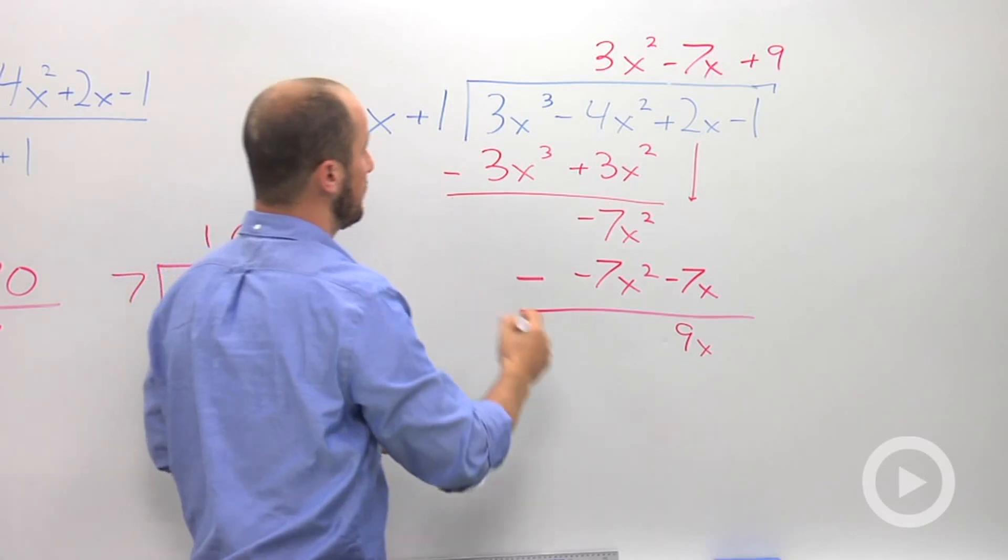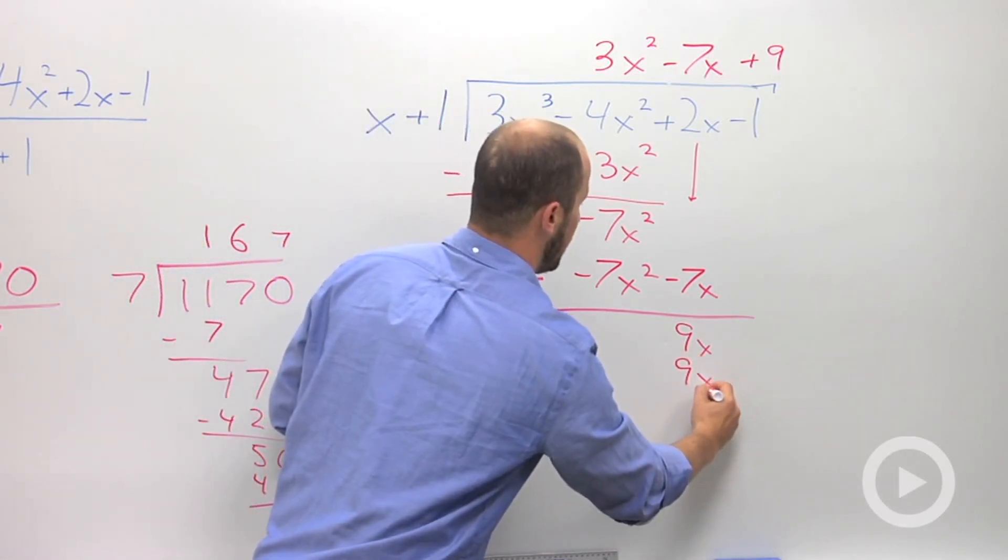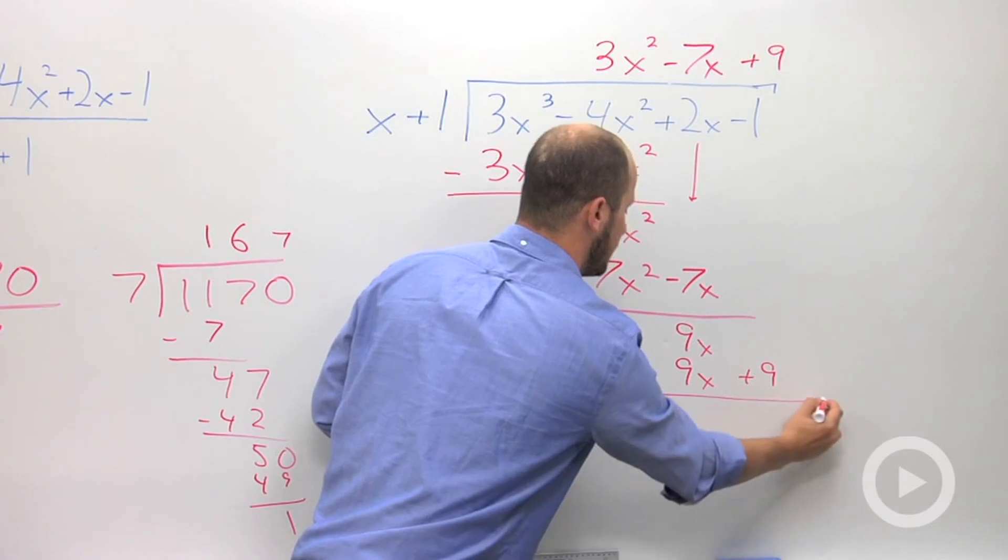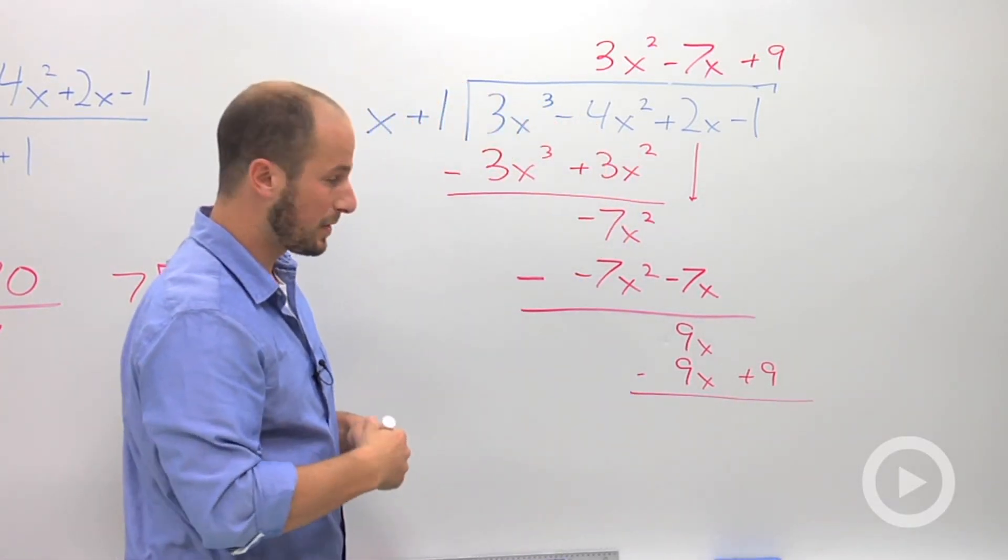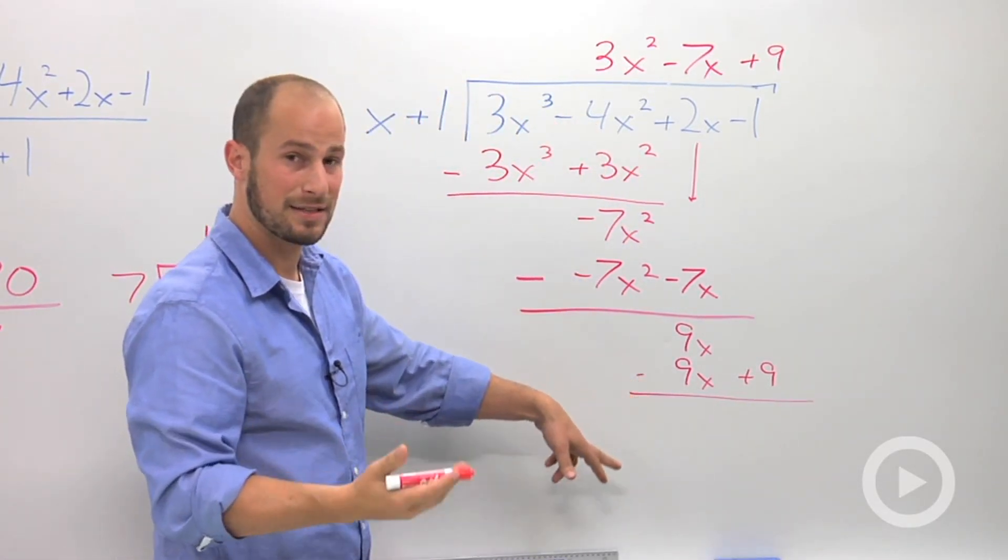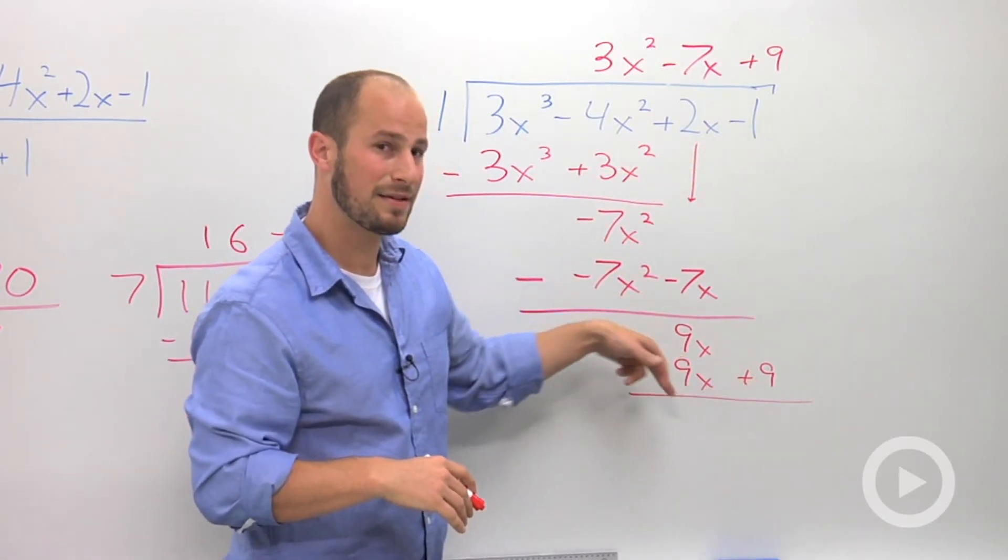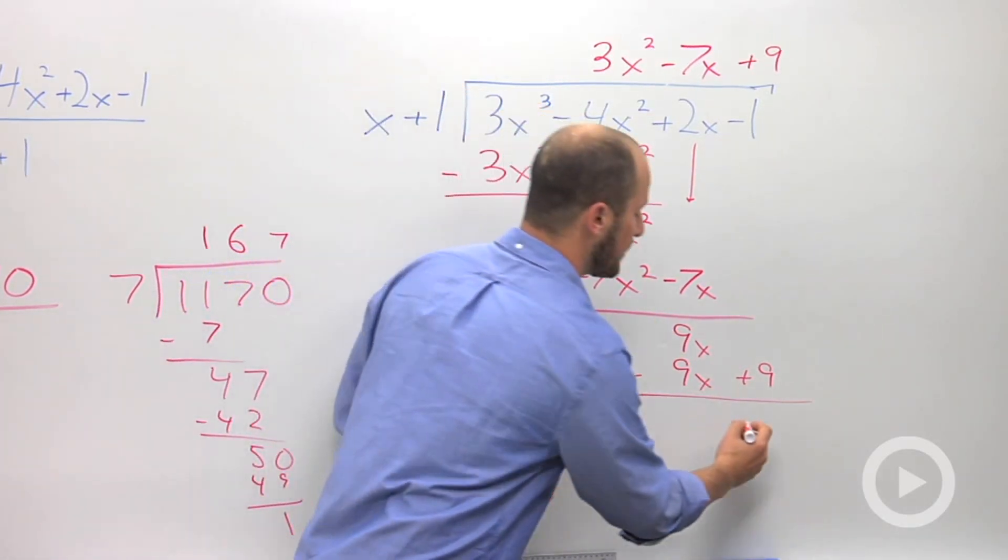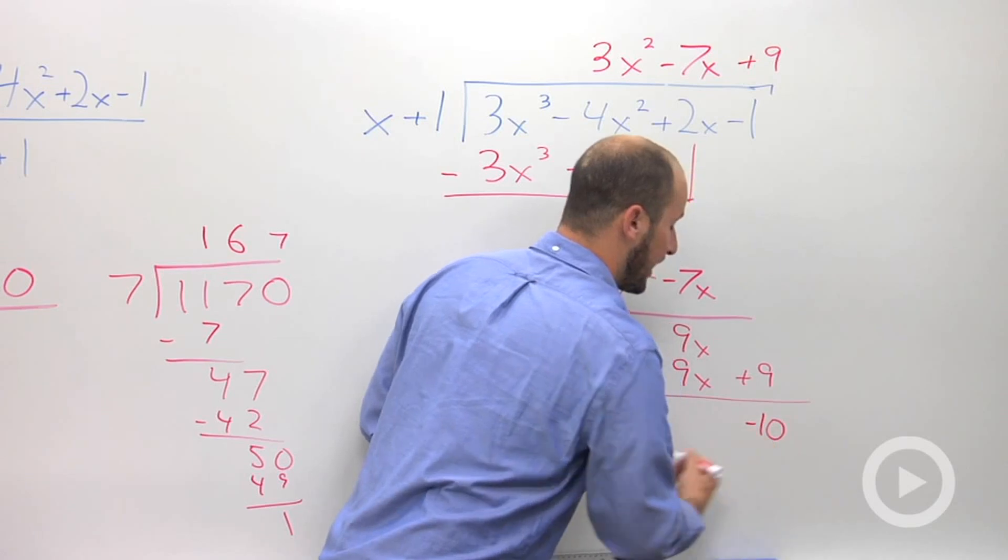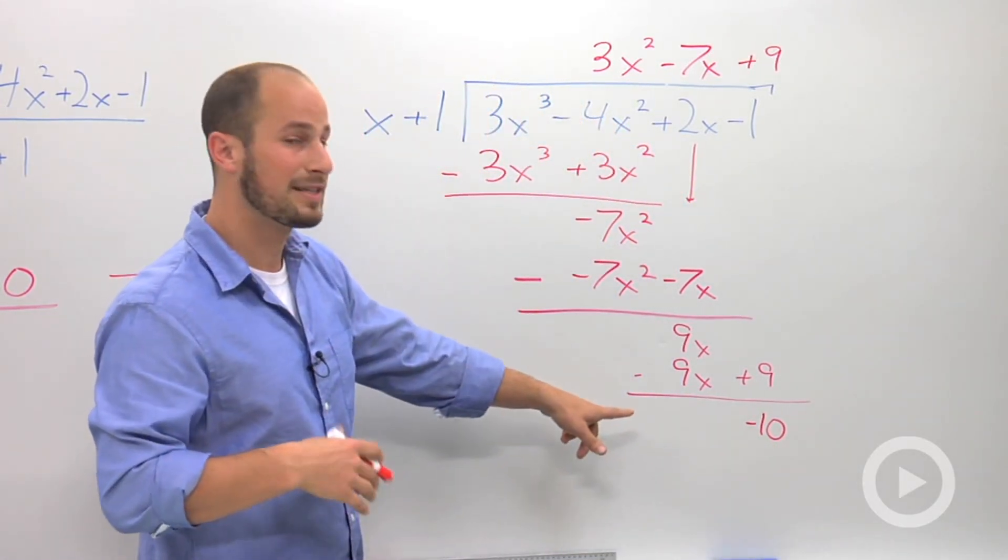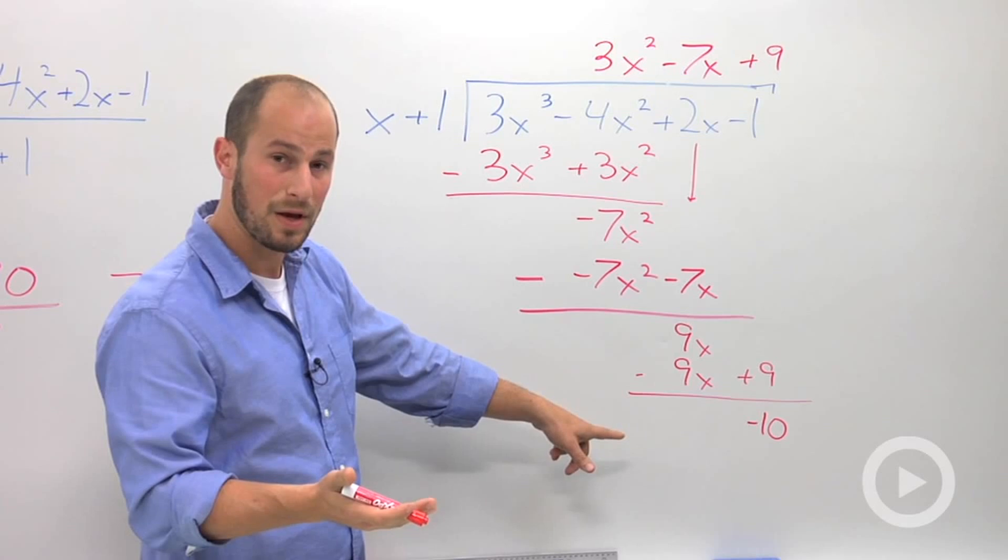That 9 gets distributed through 9x plus 9. And once again, we subtract. Okay? 9x minus 9x, those cancel. Negative 1 minus 9 plus a negative 9. So this is going to give us negative 10, which is the remainder. Nothing we multiply x by will give us negative 10. Okay?